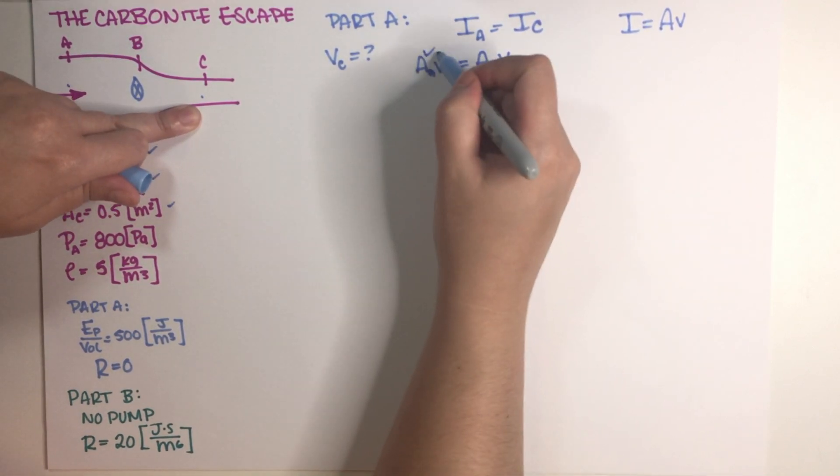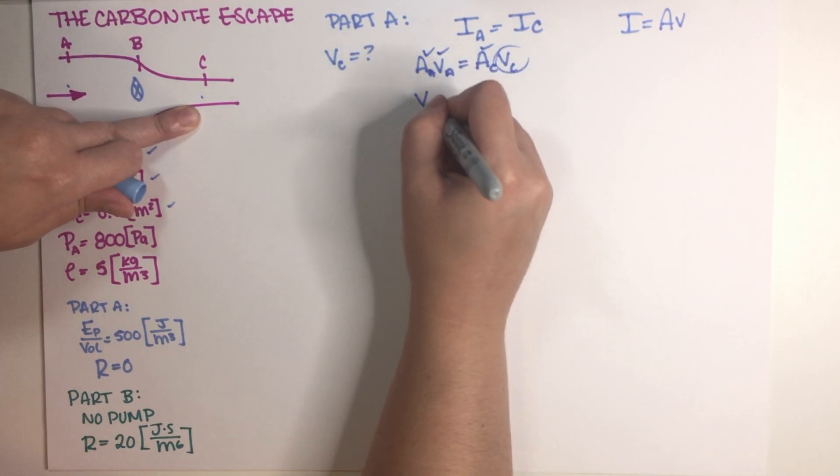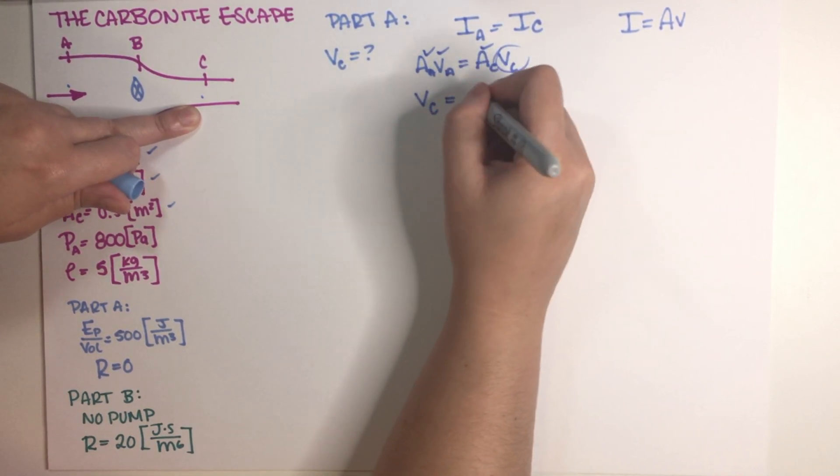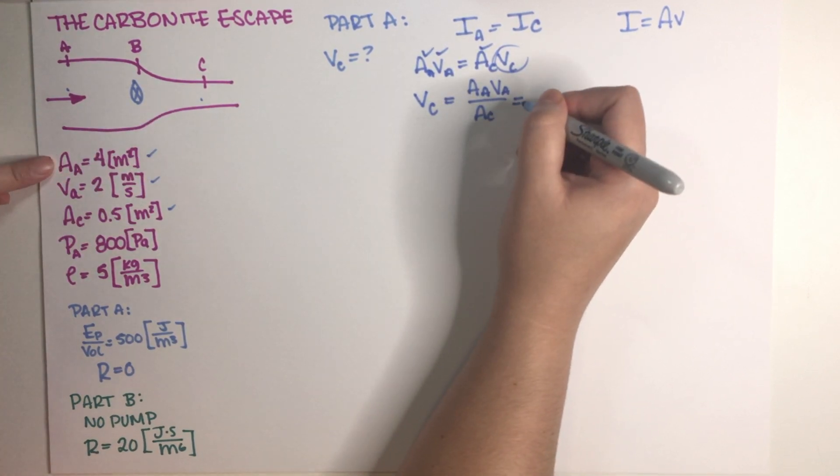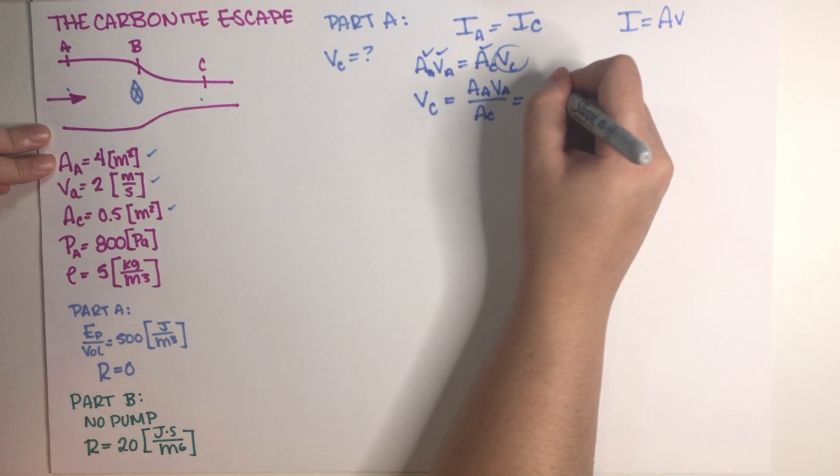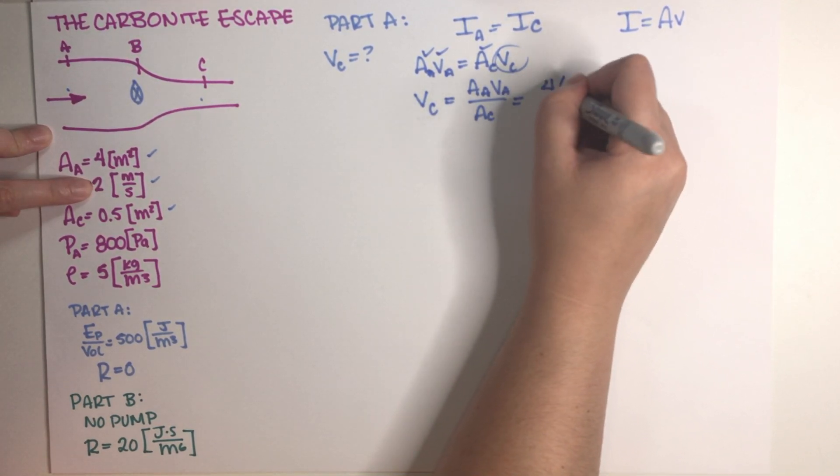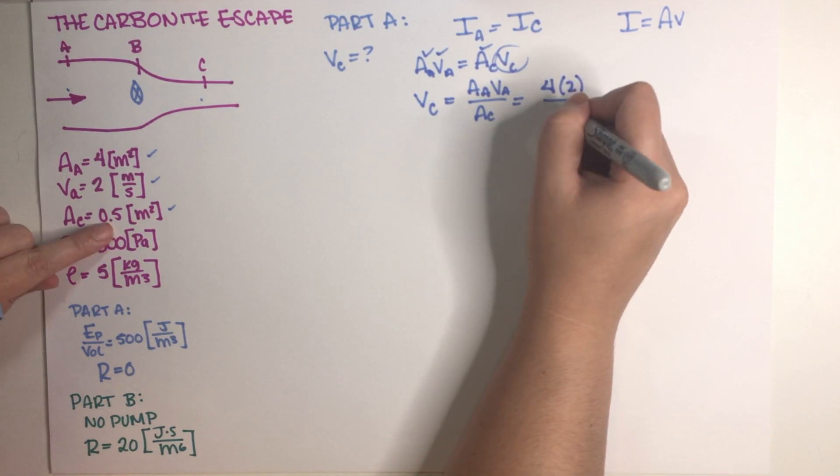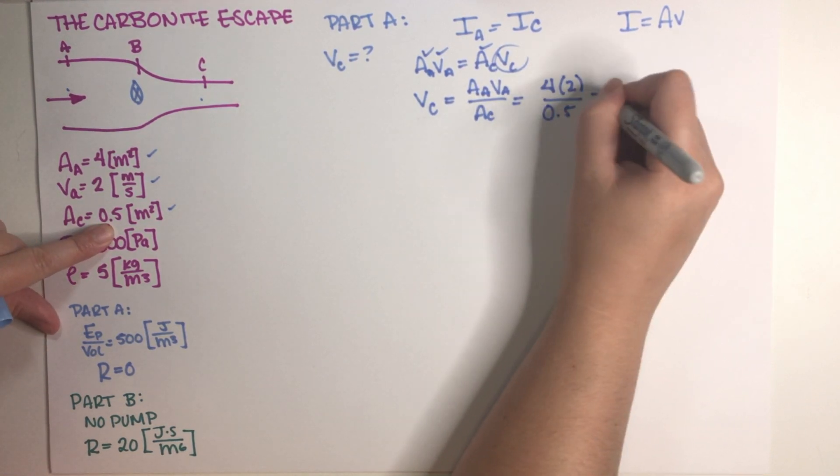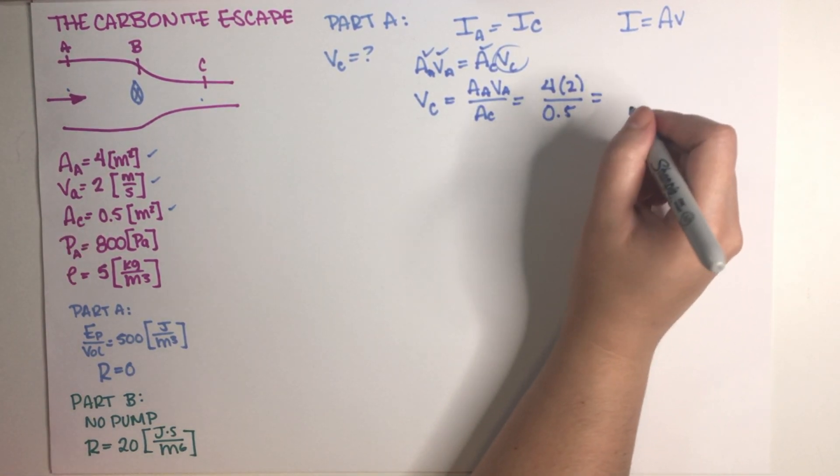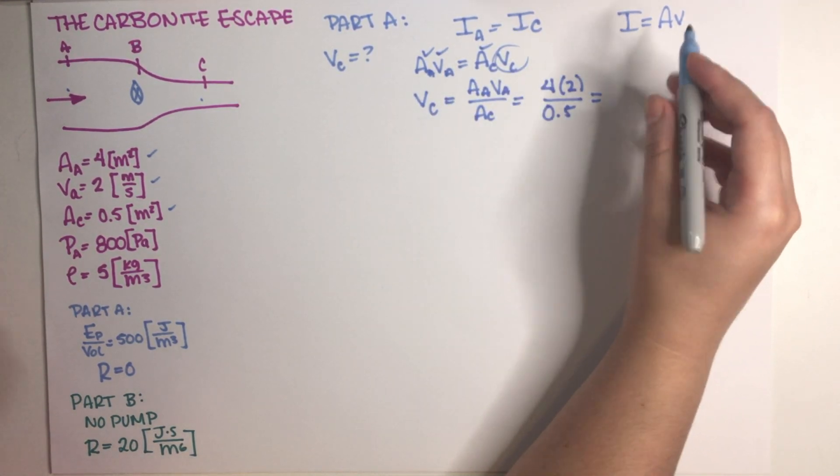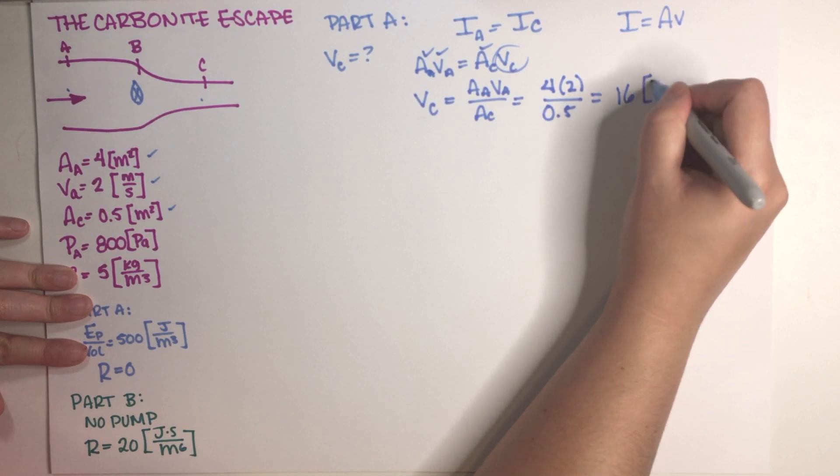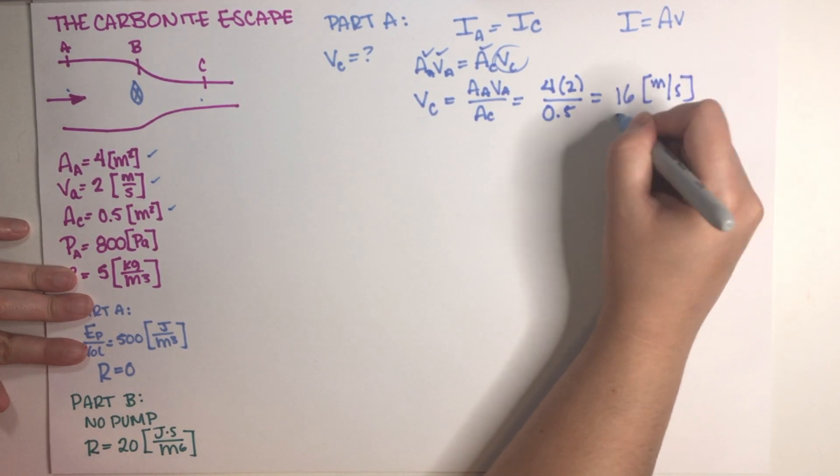We know these three and we want to solve for this. So velocity C is equal to area A velocity A divided by area at C. So this is equal to 4 times 2 divided by 0.5, and this is equal to 16 meters per second, final answer.